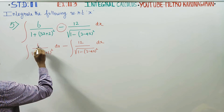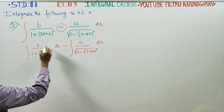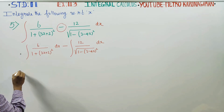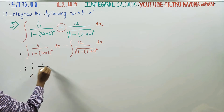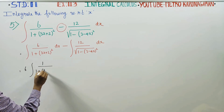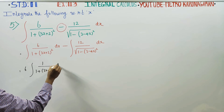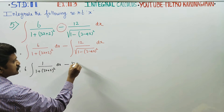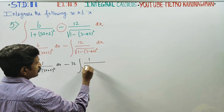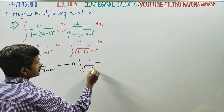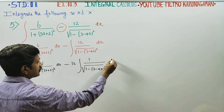You can take the constants outside. 6 will be taken out. Your sum will be 6 times integration of 1 by (1 plus 3x plus 2) squared dx, minus 12 times integration of 1 by square root of (1 minus (3 minus 4x) squared) dx.